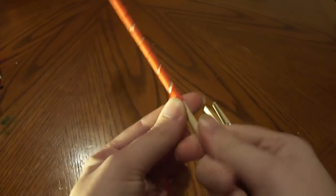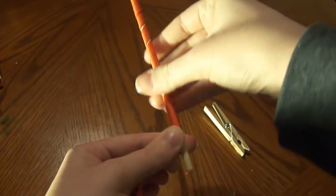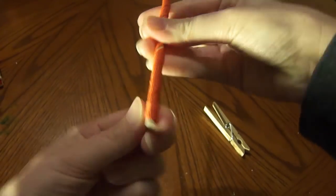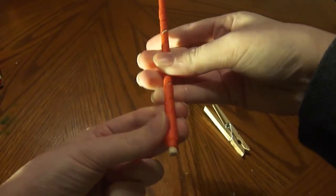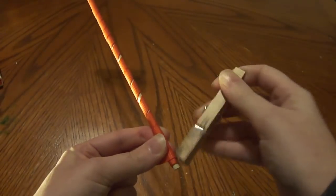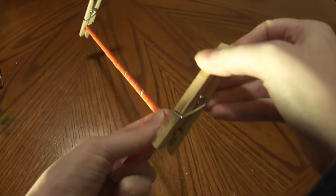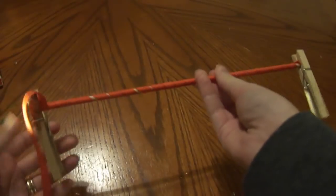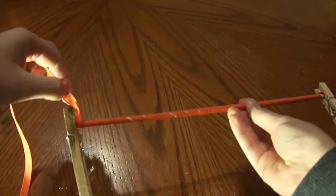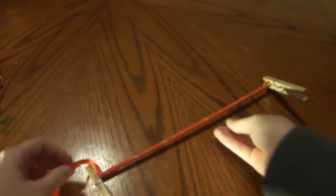Once you get to the end, again, you're going to wrap your ribbon a couple of times and secure it with your other clothespin. And here, you're just going to trim the end with your scissors.